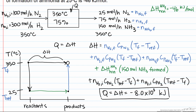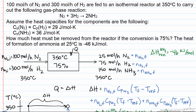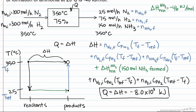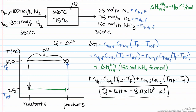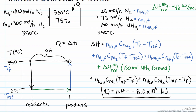Evaluating the full expression, we get ΔH = −8.0 × 10³ kJ to achieve 75% conversion of 100 moles of nitrogen and 300 moles of hydrogen. The negative sign confirms heat must be removed for this exothermic reaction. Since those feed rates are actually per hour, we convert to a rate: dividing by 3600 seconds per hour gives a heat removal rate of 2.2 kW that must be maintained to process this amount of material.